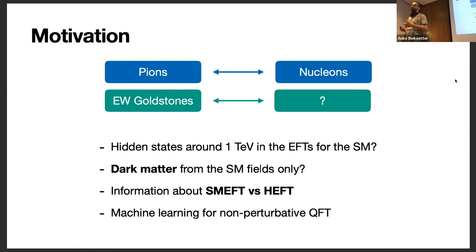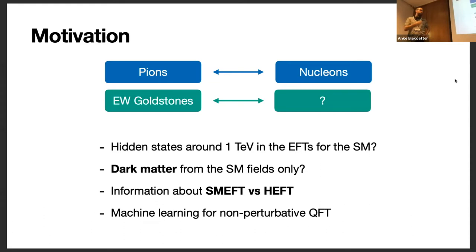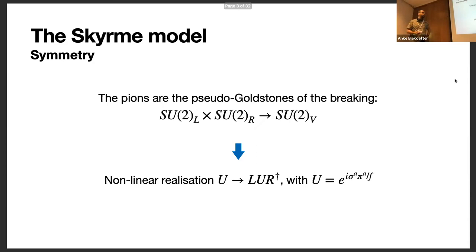Instead, they arise from non-perturbative effects in the true theory. These particles are also neutral and long-lived, which means they could be good dark matter candidates. Their existence and properties are very strongly tied to the true symmetry breaking mechanism, and in particular to whether you have a linear or a non-linear realization of the symmetry — the SMEFT versus HEFT question. I will also discuss briefly the methodology we use, which is based on machine learning techniques applicable to other non-perturbative problems in QFT.